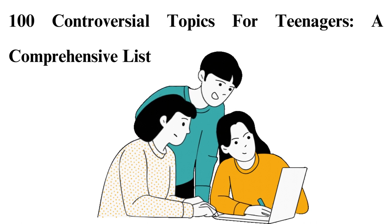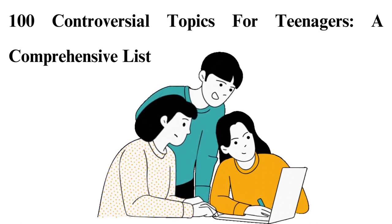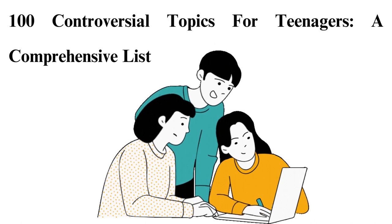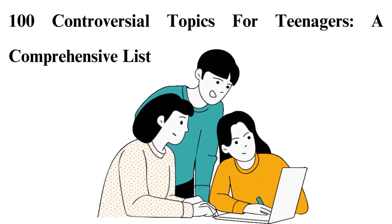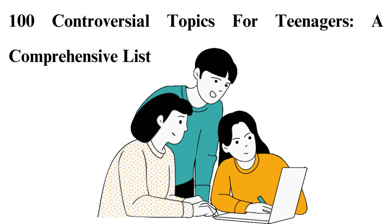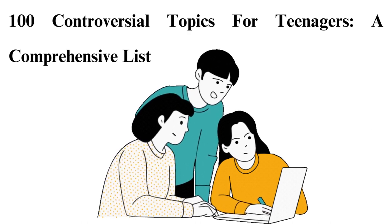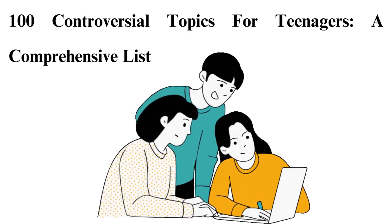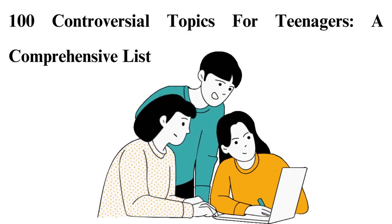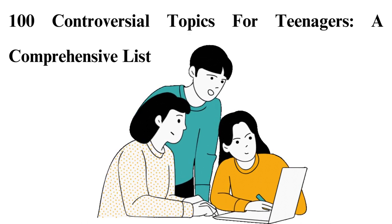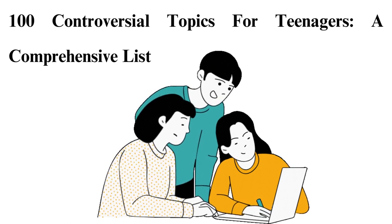100 Controversial Topics for Teenagers — A Comprehensive List. Every student should participate in sports. Bullying can be solved using caning. Students should grade teachers. College should be free for all. Schools should not ban books. Schools should have uniforms. Science is the most important subject in school. Human cloning will be possible in the near future.